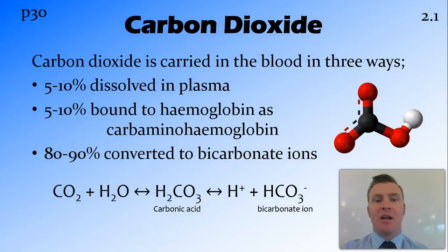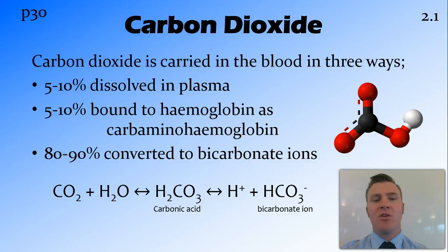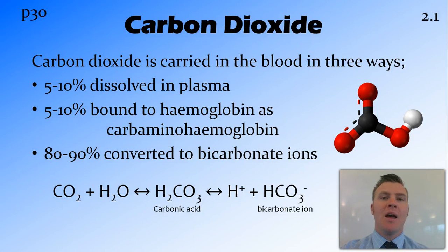Firstly, carbon dioxide. Carbon dioxide is carried in the blood in three different ways. There are two minor ways: it's dissolved in the plasma. However, not much carbon dioxide can be dissolved in plasma because as temperature increases, carbon dioxide's ability to dissolve in water decreases. There's another few percent that are bound to the hemoglobin found on the red blood cells, and when they bind, they form a molecule called carbaminohemoglobin.